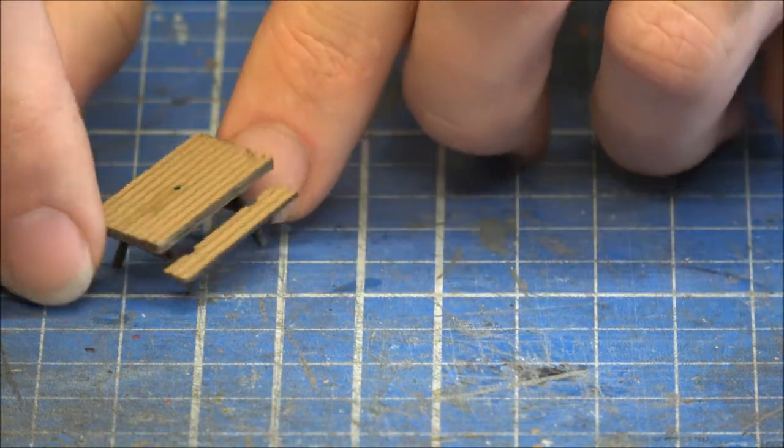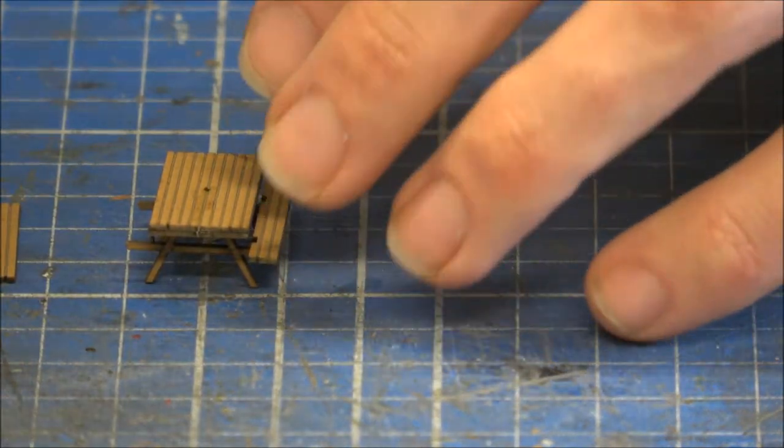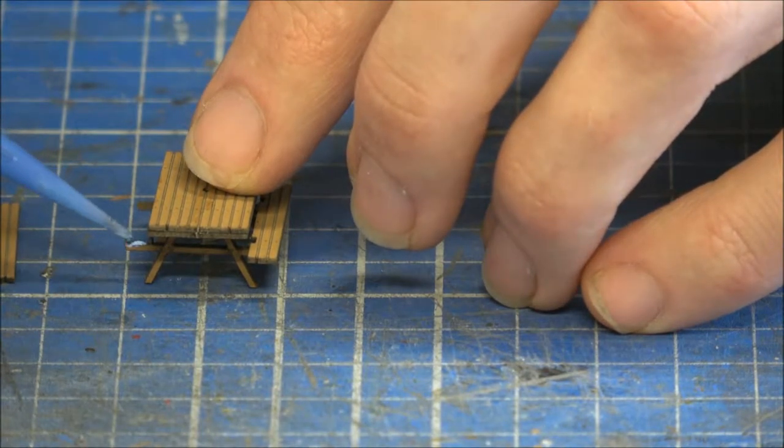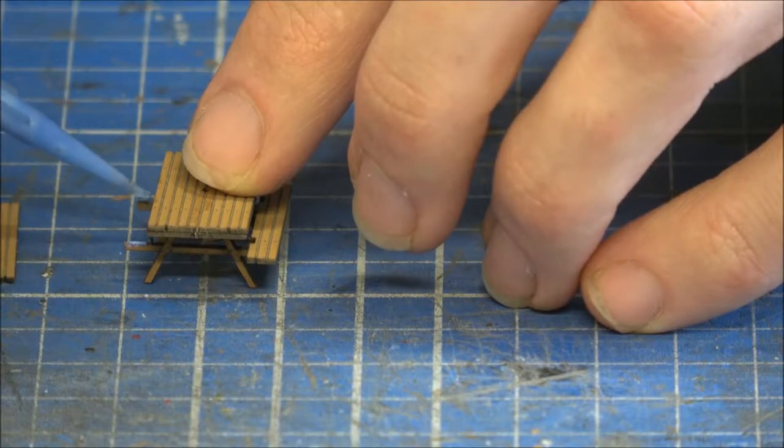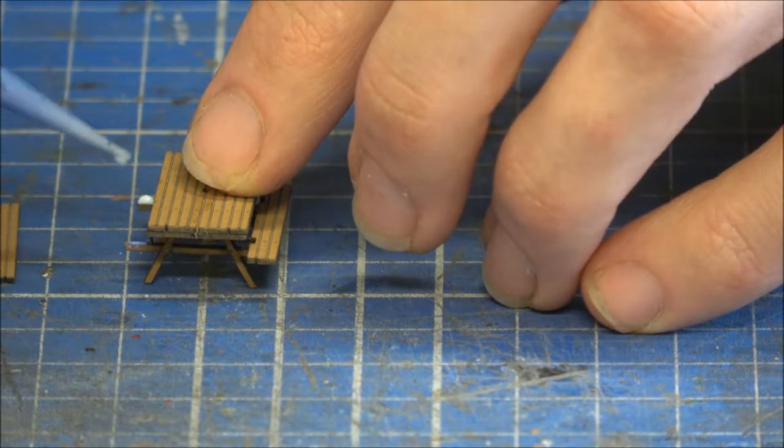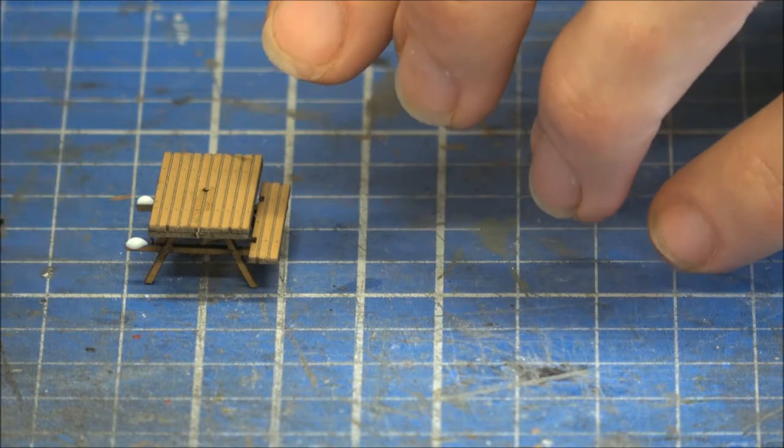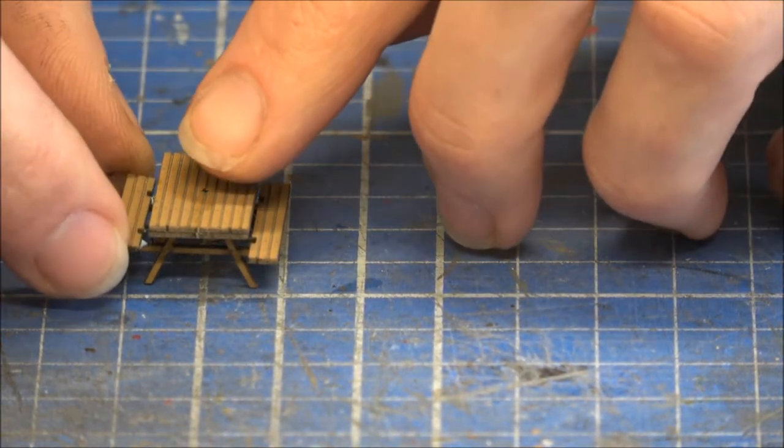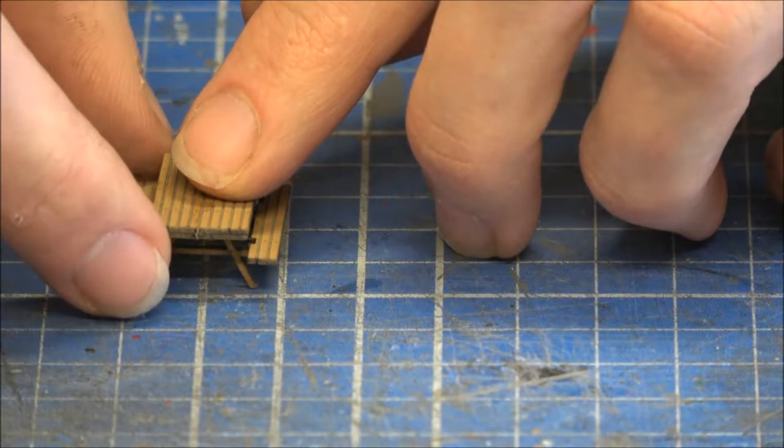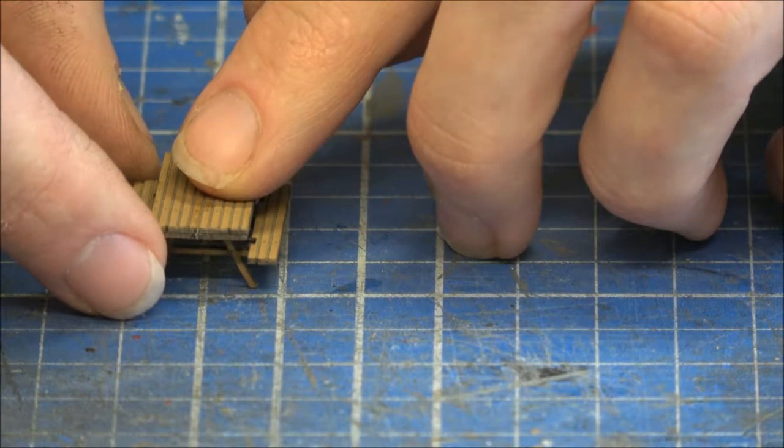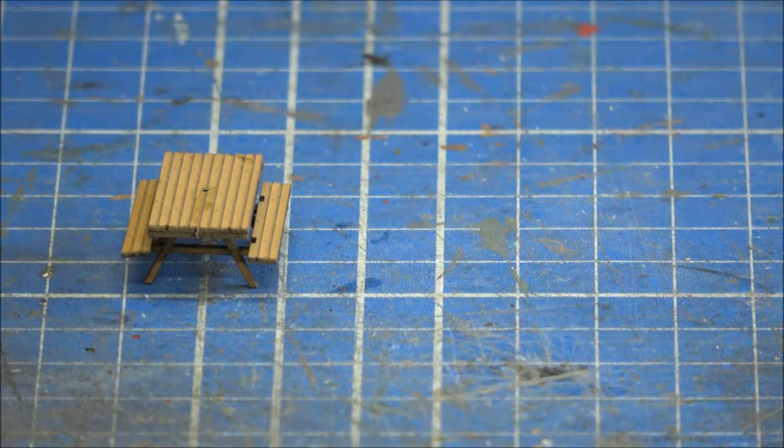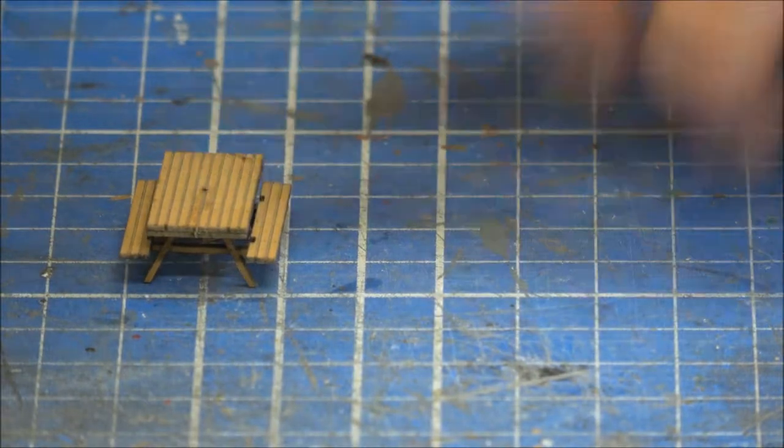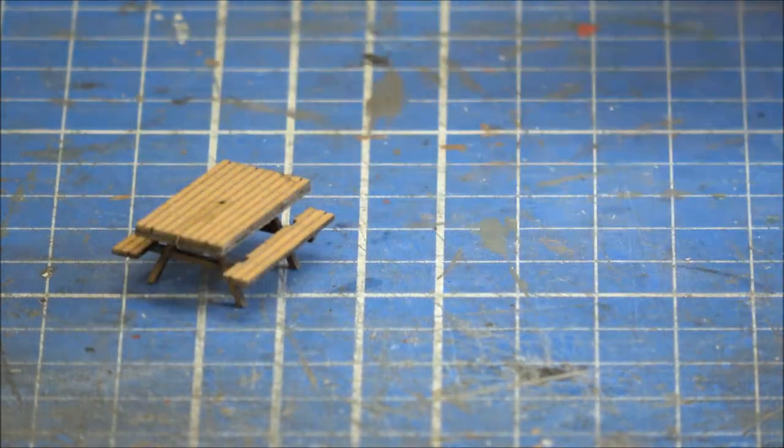Let's turn it around so I can do the other side. Doesn't need a lot of glue, just a little bit to hold everything in place. So there we have one traditional picnic pub bench.